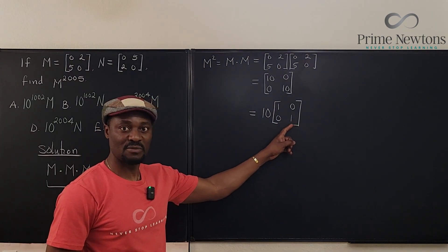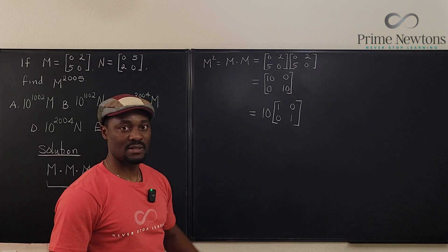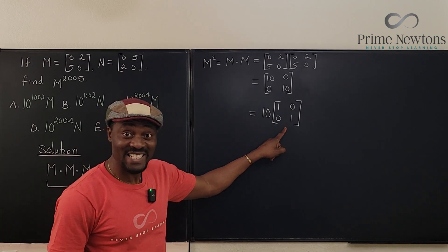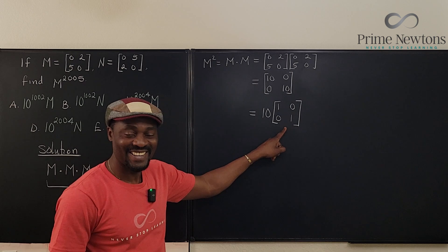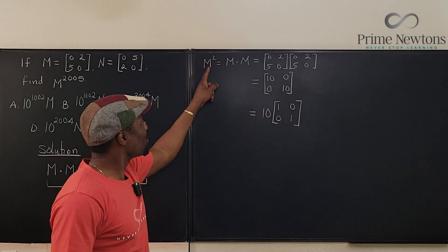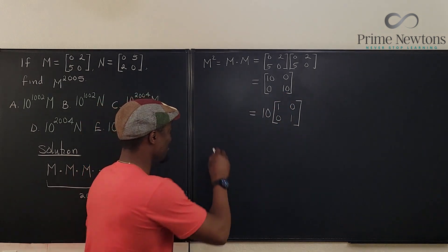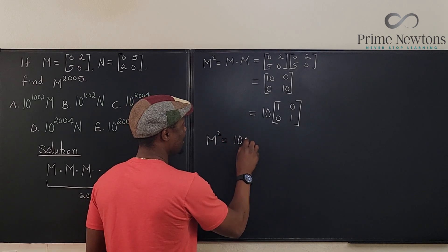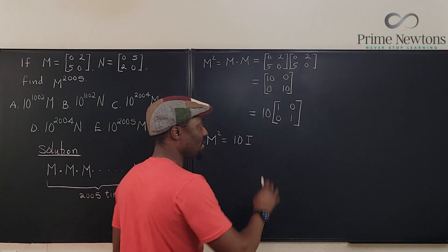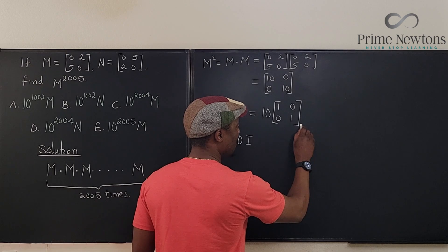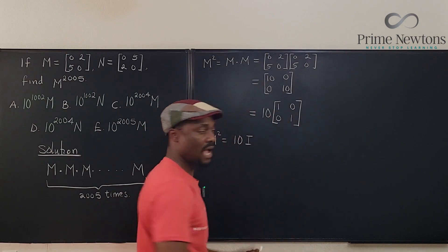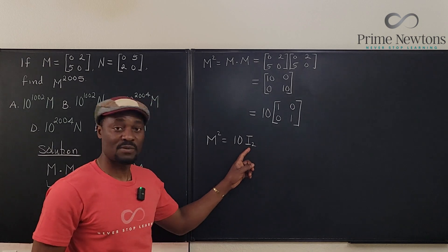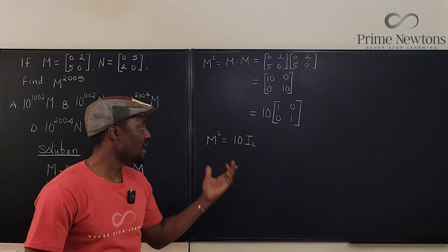This is the transformation of this matrix. Because if I multiply this matrix by 10, it's going to go back to this. What is this matrix? This is the identity matrix. So M squared is actually 10I. So we can say that M squared is 10 times the identity matrix for a 2 by 2. This is I₂, the 2 by 2 square matrix.